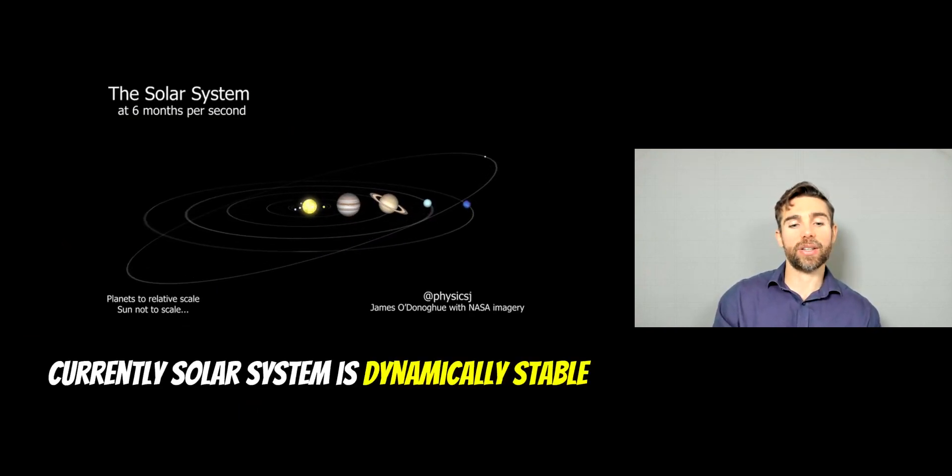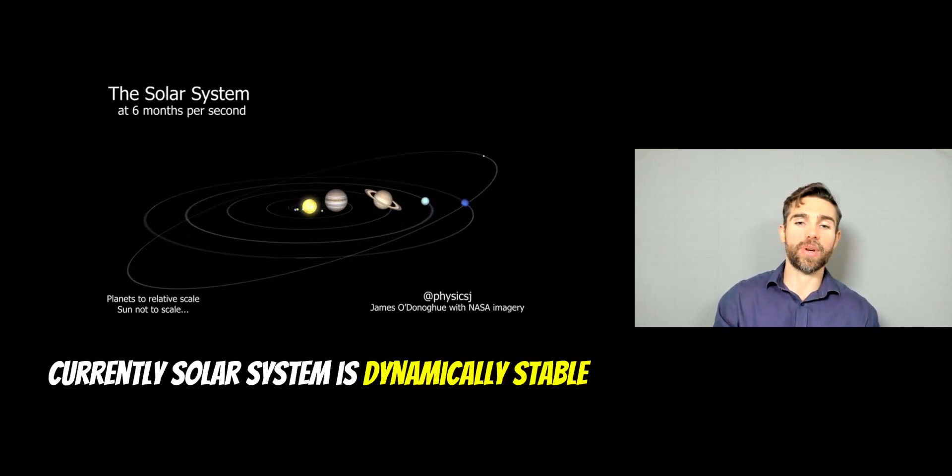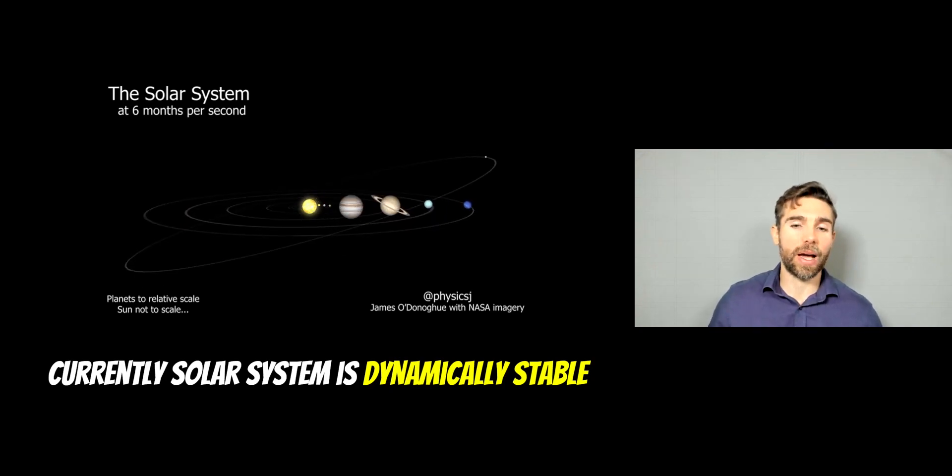And in fact, currently, the solar system we can consider to be dynamically stable. We don't expect the planets to change their orbits, including the Earth, and long-term stability is expected for the solar system.